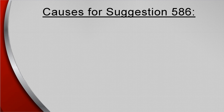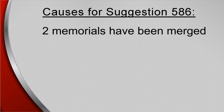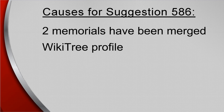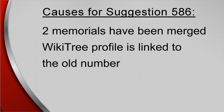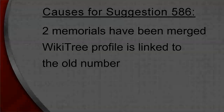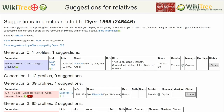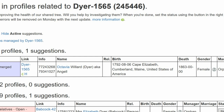Suggestion 586 is caused when two Find a Grave memorials have been merged and the WikiTree profile is linked to the memorial number no longer in use. Here is the suggestion report for Octavia Dyer showing only one Suggestion 586. The info column shows two Find a Grave memorial numbers, at least one of which is no longer valid.